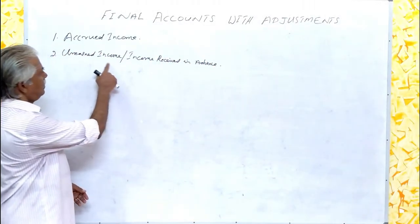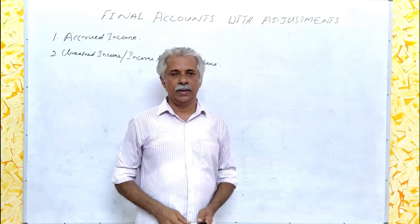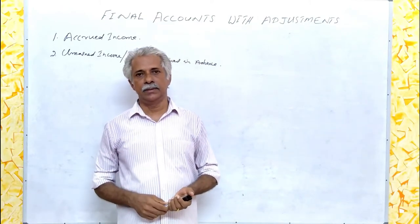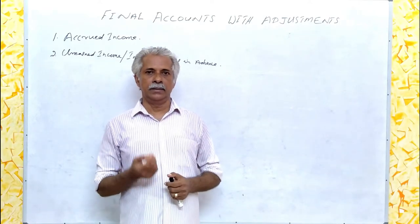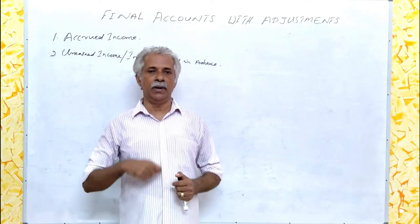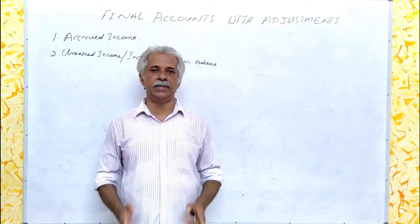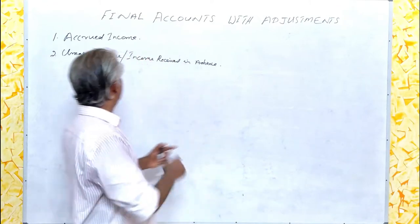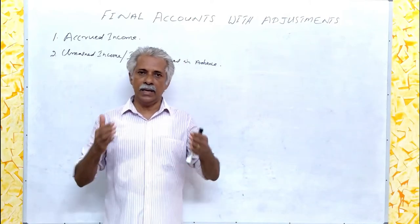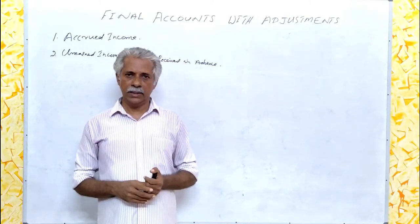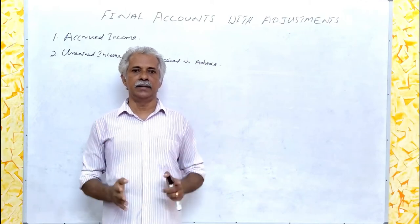The second item is unearned income or income received in advance. Unearned income simply means the income already received but not yet earned. That portion of income which belongs to the next accounting period but is already received during the current year is called unearned income or income received in advance. We are not eligible to earn it now, but actually it is realised in this year itself.